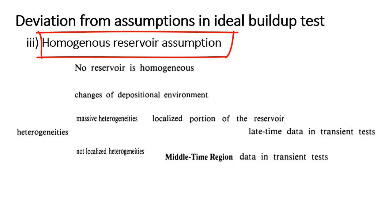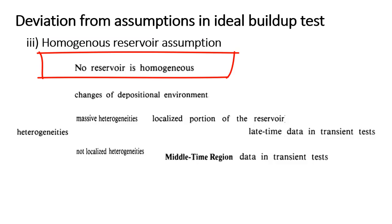The third assumption is the homogeneous reservoir assumption. Actually, there is no reservoir which is completely homogeneous. When homogeneity is lost or heterogeneity is high, this heterogeneity is of two types: one is called massive heterogeneity or localized heterogeneity, and the other is called distributed heterogeneity.